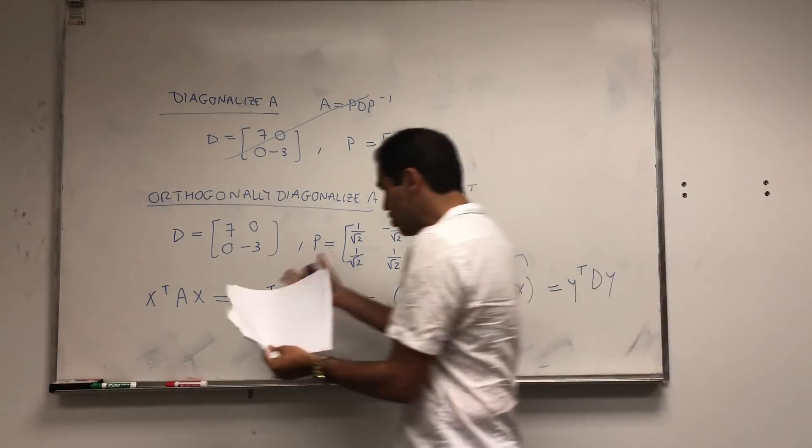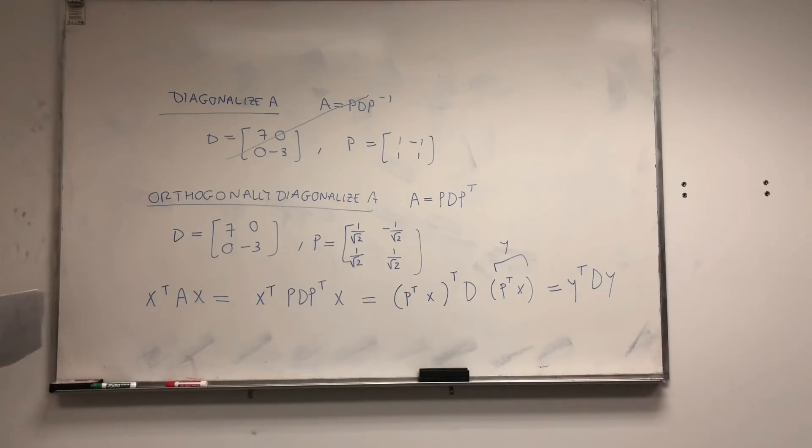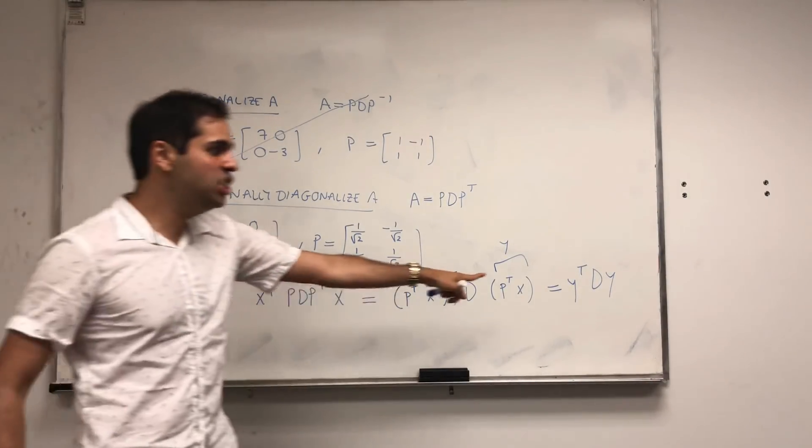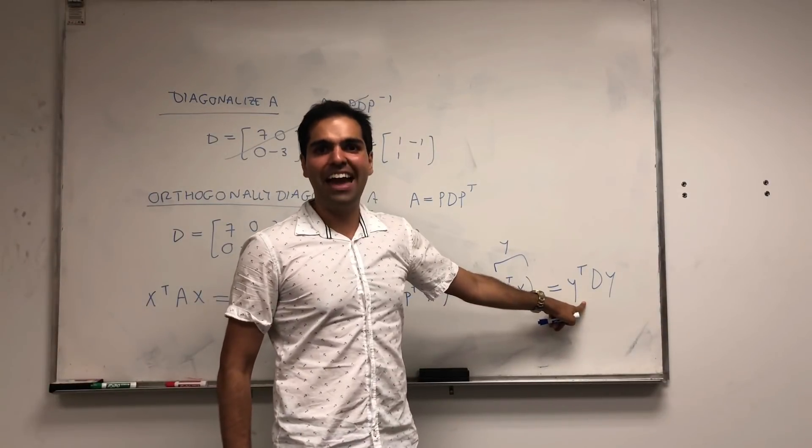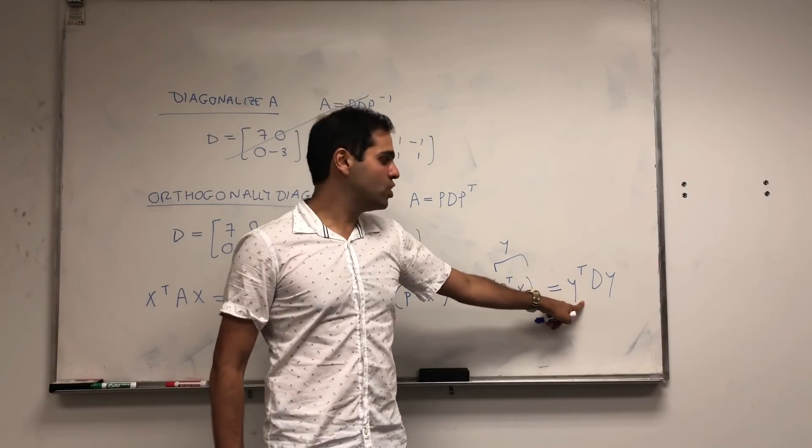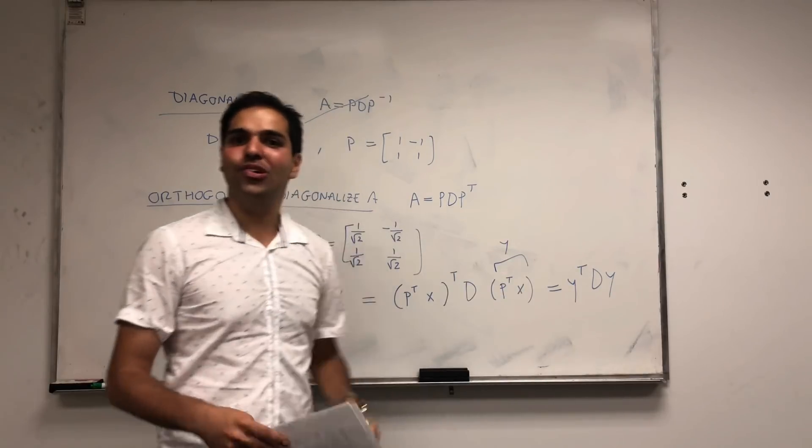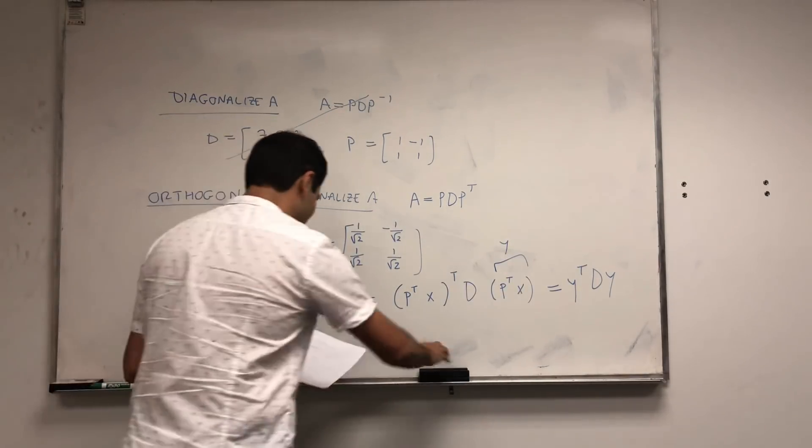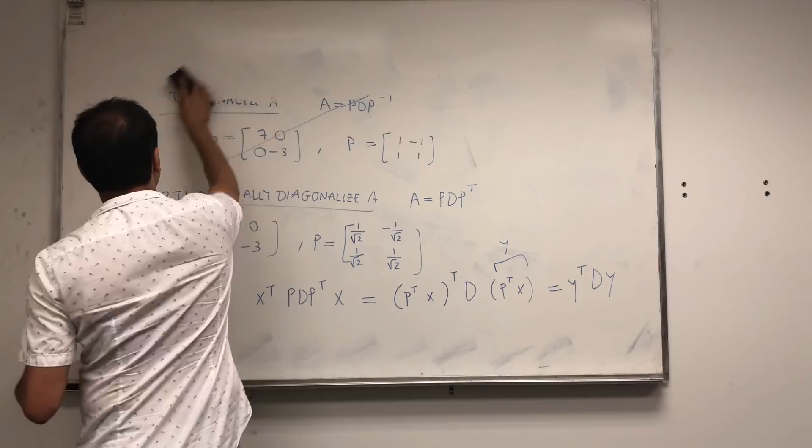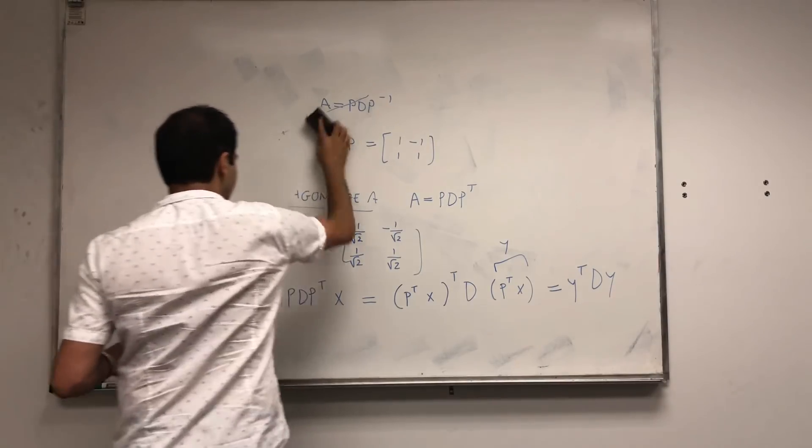Because X transpose P is the same thing as P transpose X transpose. And then D, and then just P transpose X. So here is a cool thing. If we actually let Y to be P transpose X, then this becomes Y transpose DY. In other words, you took the complicated quadratic form X transpose AX and turned it into a new quadratic form Y transpose DY, which is much, much easier.